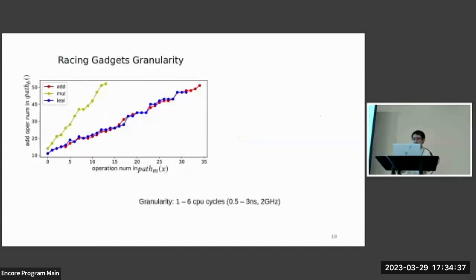And to test the granularity of the racing gadgets for various operations, we use it to measure how many operations there are in the measurement path, whose actual number is shown in the x-axis. The y-axis shows corresponding maximum number of operations in the baseline path that is faster than the measurement path, thus letting the access to A happen. The granularity, as shown here, is around one to six CPU cycles, which is within three nanoseconds for a two gigahertz processor.